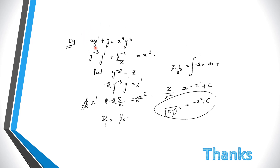So in the case of Bernoulli's equation, after substituting y to the power n, we reduce the differential equation into a linear differential equation and solve it. The solution will be in terms of the new variable, and at last we substitute back. With this, your first-order differential equations topic is completed. Thanks.